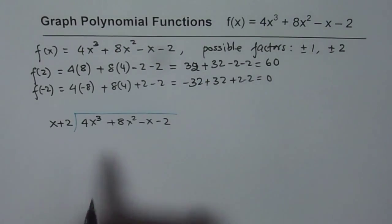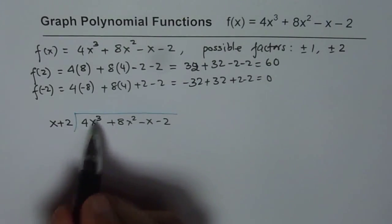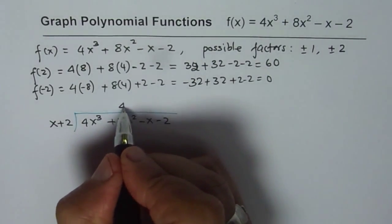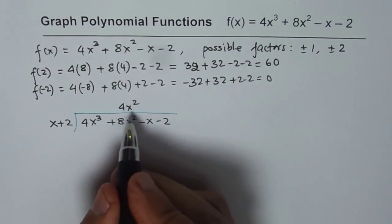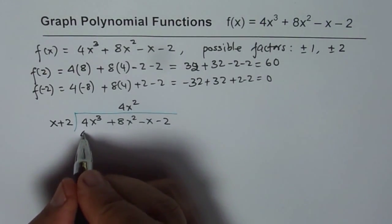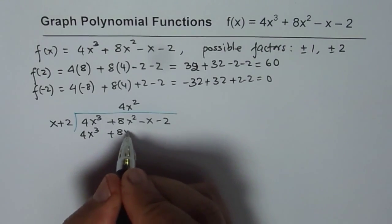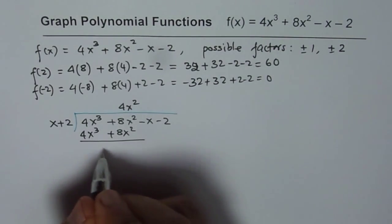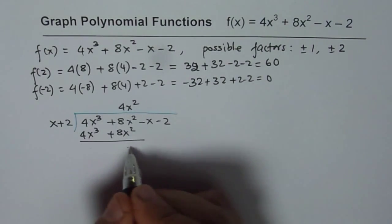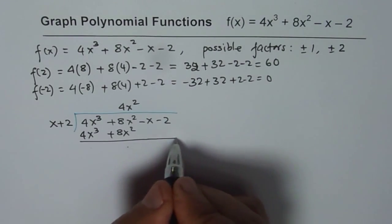So it is 4x cubed here plus 8x squared minus x minus 2. So we should divide it by x plus 2 since minus 2 gives us a 0. So we will take the first 2, 4x cubed. So we should multiply this by 4x squared. So 4x squared times x will give us 4x cubed. With plus 2, it will give us 8x squared. When we take away, we get 0, 0. So then we should bring down both the terms. So we have minus x minus 2.